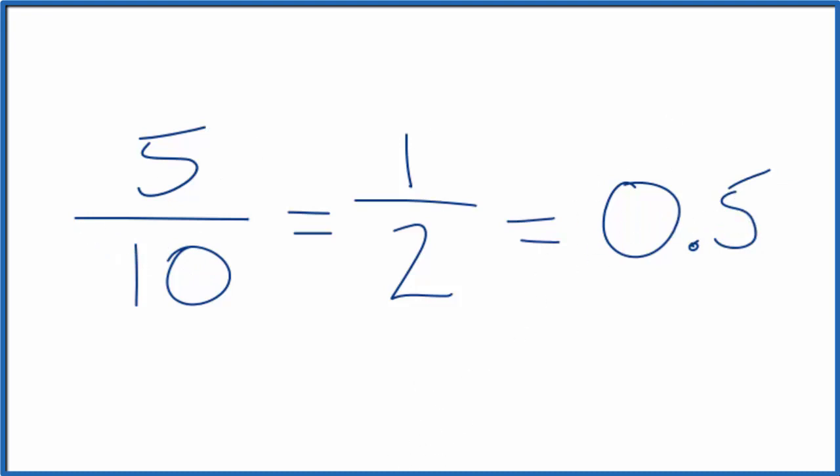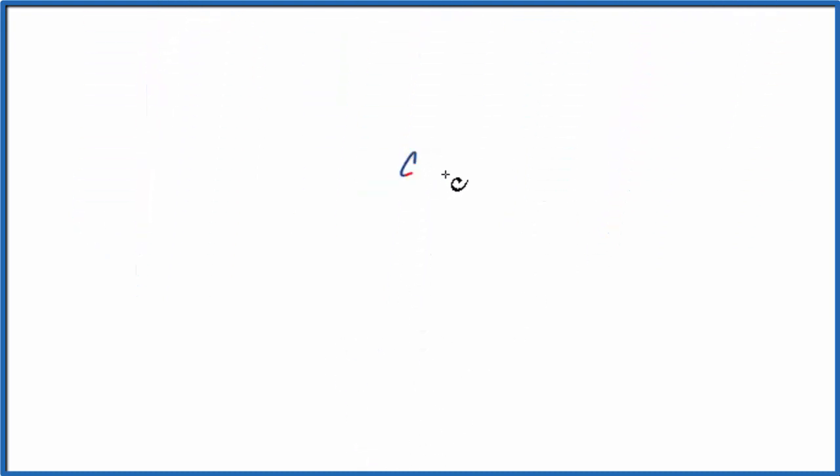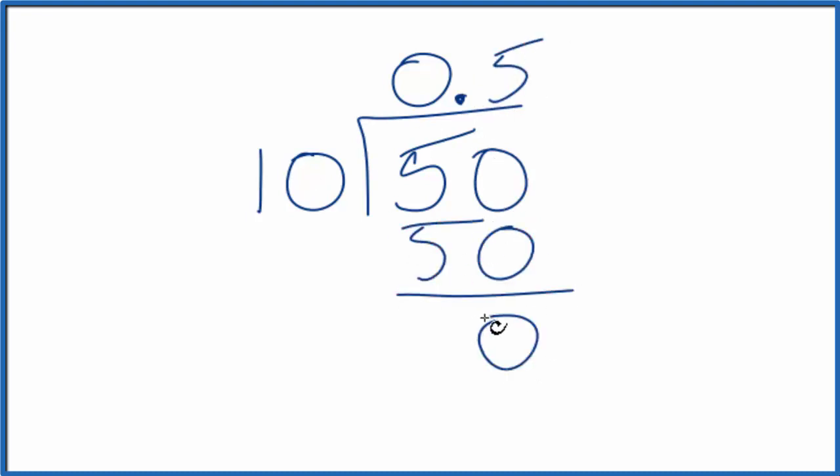We could also do this longhand. We could take 5 and divide 10 into 5. So we have 5 divided by 10. 10 doesn't go into 5, so we'll put 0 point here. And then we can call this 50. 5 times 10, that's 50. So 5 tenths is equal to 0.5.